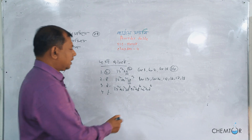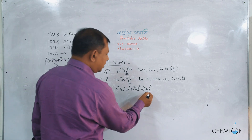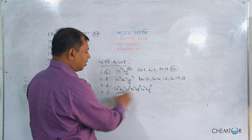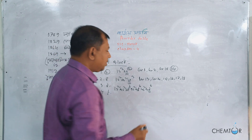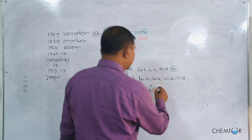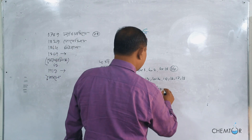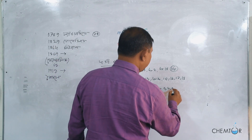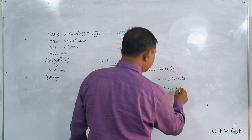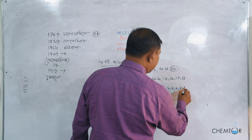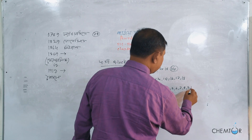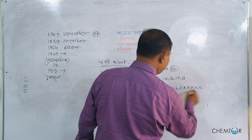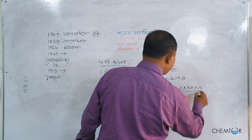As D-Block, in groups we call it group 3, 4, 5, 6, 7, 8, 9, 10, 11, 12. These are the same — D-Block.